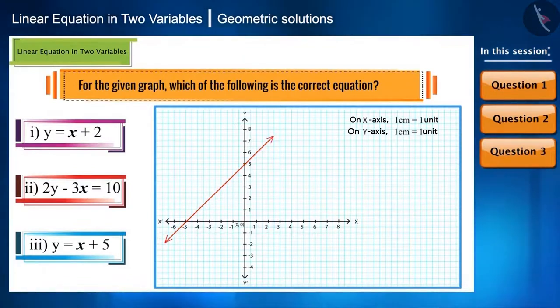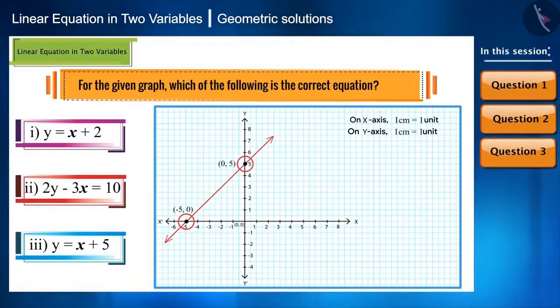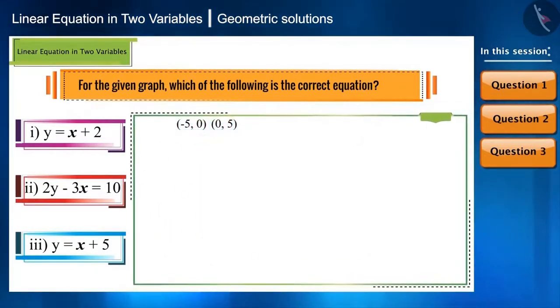Now place the same values of x, y in all the given equations. Here, the line intersects the x axis at minus phi and the y axis at phi. That is, we got two coordinates of x, y. That is minus phi comma 0 and 0 comma phi.